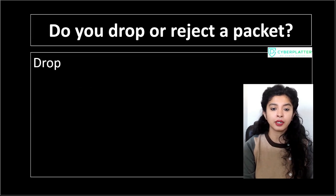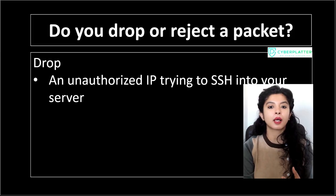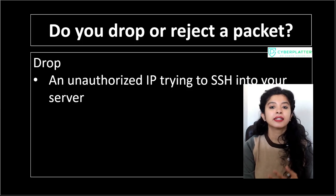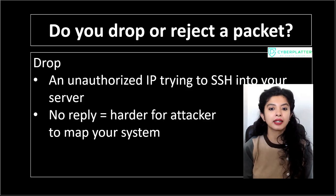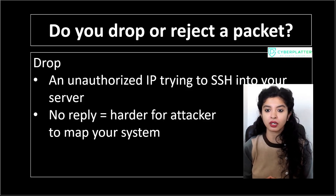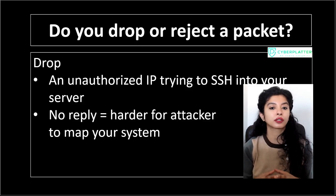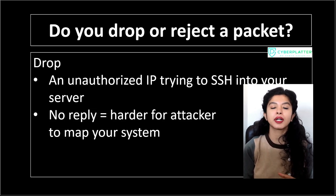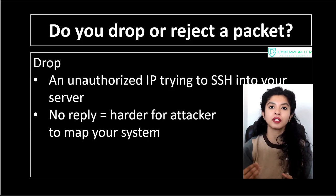Let's consider an example. Say someone from an unauthorized IP tries to SSH into your server. If the firewall drops the packet, they get no reply at all. To them, it is unclear whether SSH is blocked, the server is down, or the host doesn't even exist. That ambiguity makes it much harder for an attacker to build an accurate map of your system.